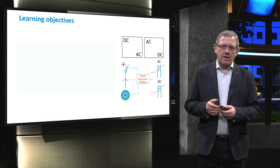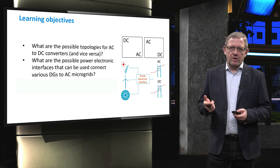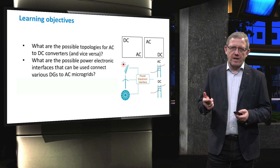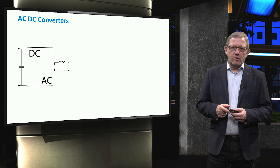The main learning objectives of today's video will fall under three main questions. First, what are the possible topologies for AC to DC converters and vice versa DC to AC. Second, what are the possible power electronic interfaces to connect various generators to the AC microgrid like photovoltaic systems, wind generators, and microturbines. And third, how these various generators could also be connected to a DC microgrid.